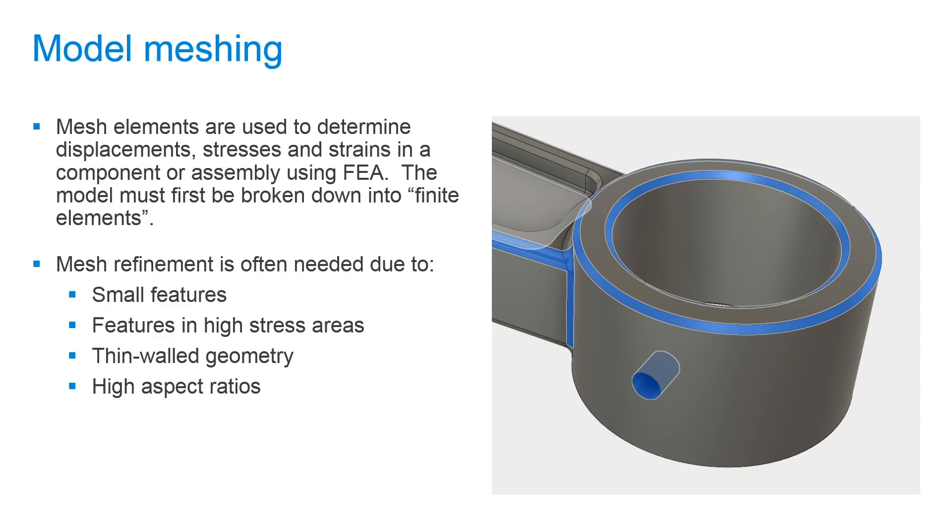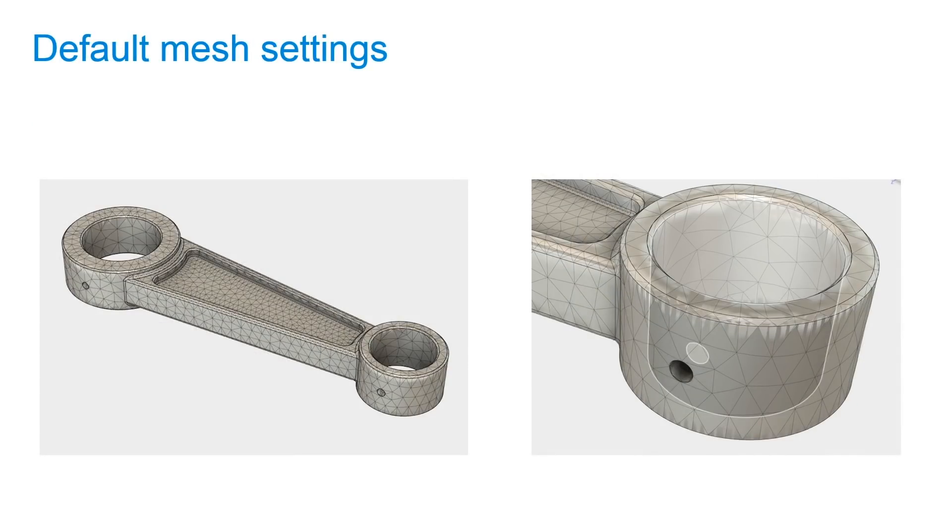Let's take a look at what a default mesh looks like. So on our part, we can see various element sizes overlaid on the solid geometry. These elements are how the mesh is going to be created. You can see that in some areas of small fillets or chamfers that smaller elements are used. This is the default setting, but we can adjust these properties based on our needs.